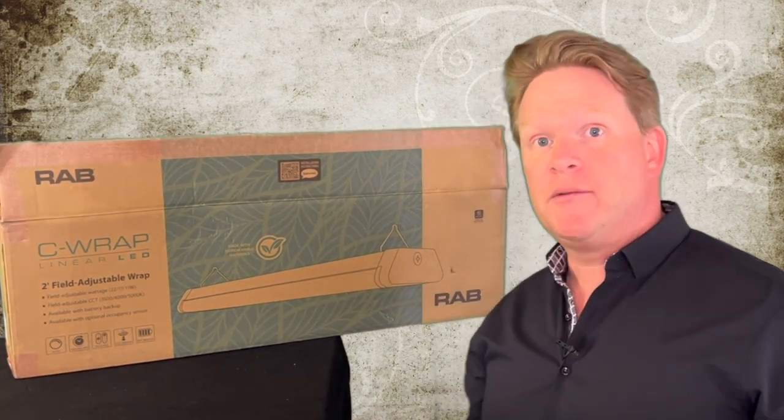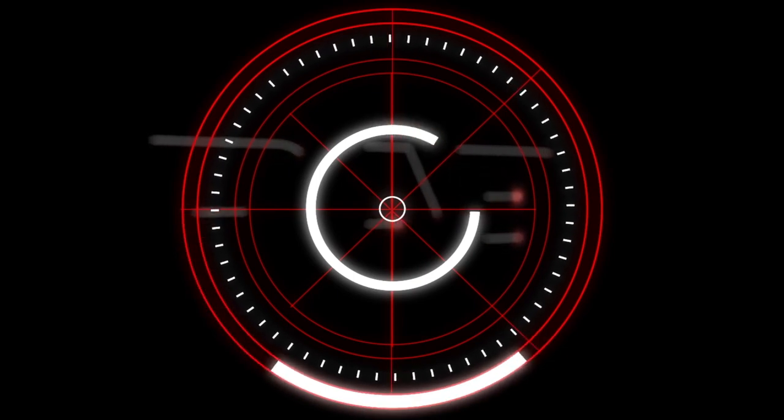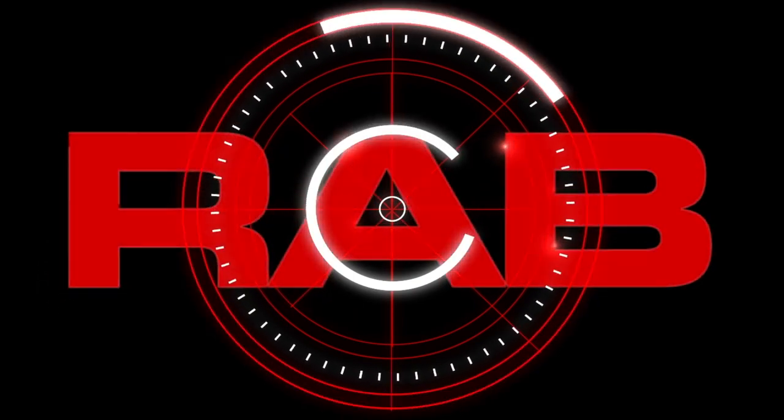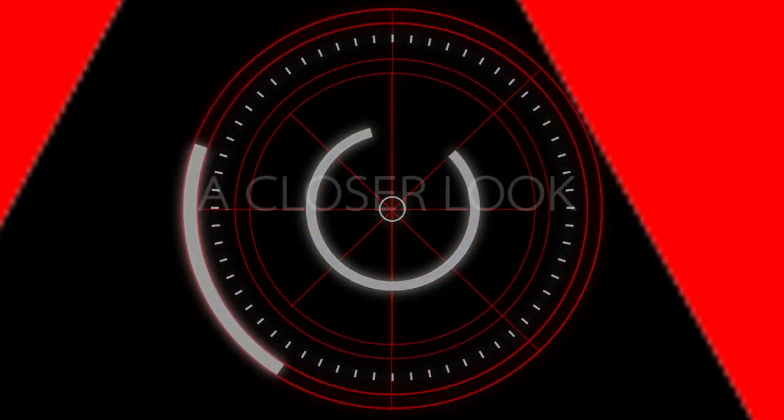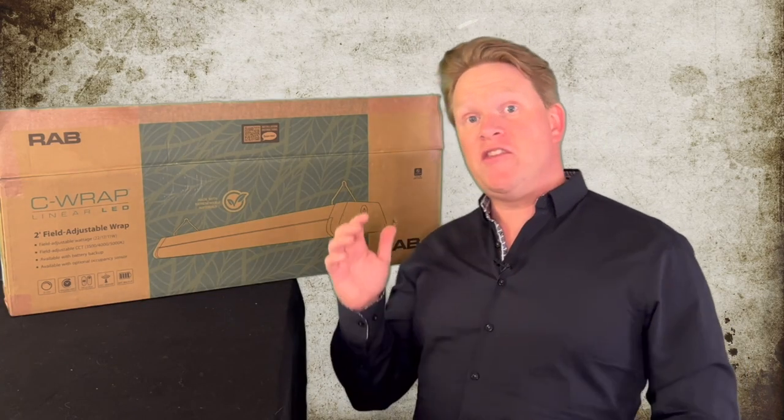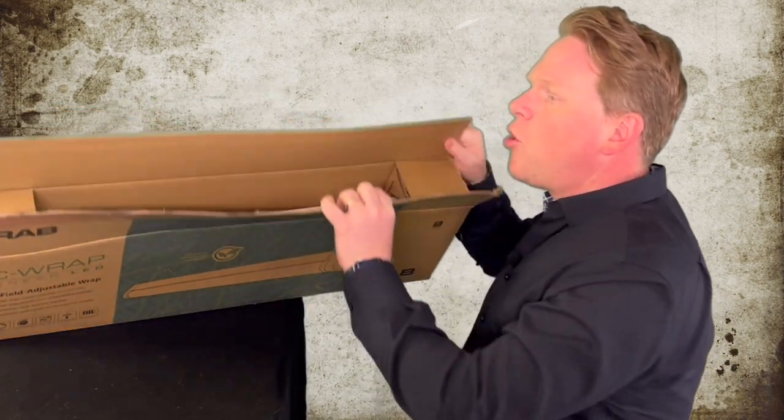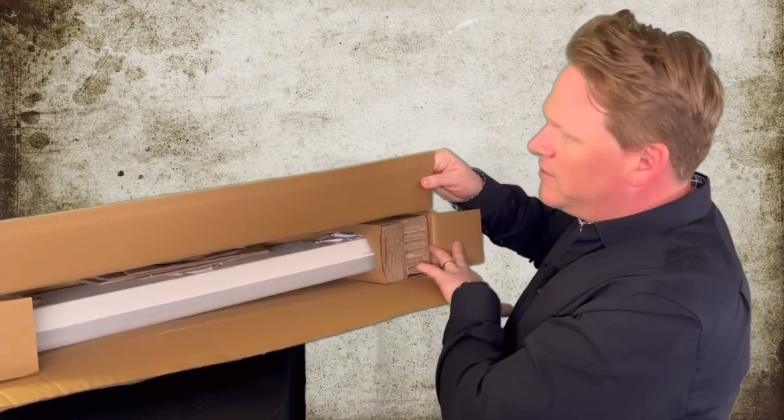I'm Matt, and this is A Closer Look. Let's start with the packaging on the new C-Rap from Rab. It comes in a corrugated box with corrugated end caps and materials here.